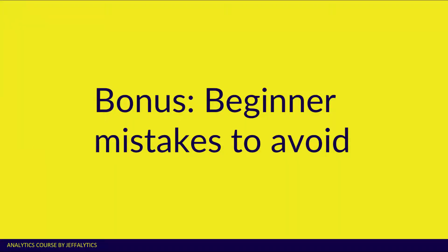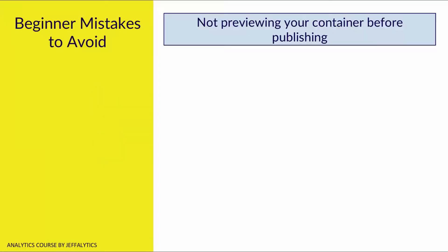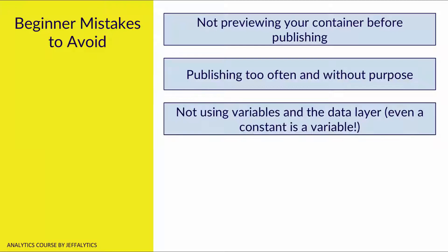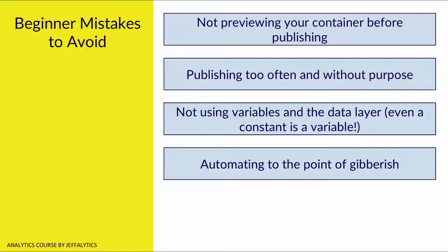Here's a bonus section: beginner mistakes to avoid when it comes to Google Tag Manager. So if you're just getting started, make sure you avoid these mistakes while you're deploying Google Tag Manager on your own site. The first mistake is not previewing your container before publishing. The second mistake is publishing too often and without purpose. The third one is not using variables in the data layer, because even a constant is a variable. And the fourth mistake is automating to the point of gibberish.